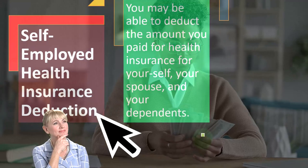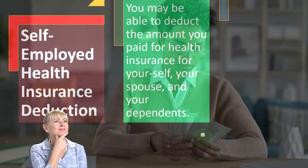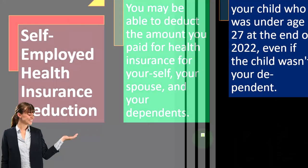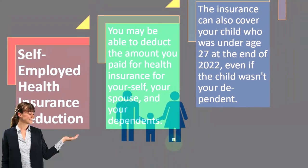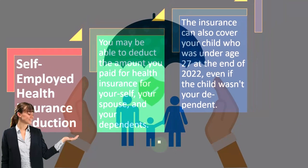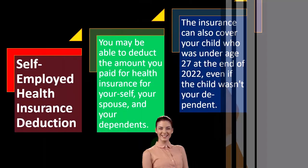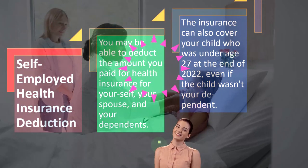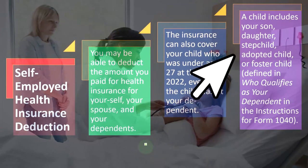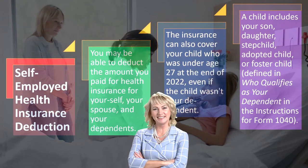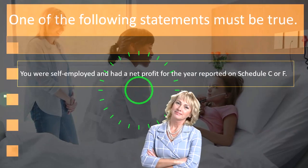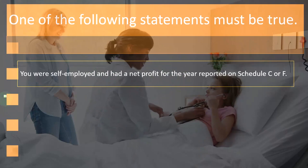Self-employed health insurance deduction: you may be able to deduct the amount you paid for health insurance for yourself, your spouse, and your dependents. If you deal with health insurance through work, you can often get coverage for your whole family — you'd want a similar benefit if self-employed. The insurance can also cover your child who was under age 27 at the end of 2022, even if the child wasn't your dependent. A child includes your son, daughter, stepchild, adopted child, or foster child as defined in the instructions for Form 1040.